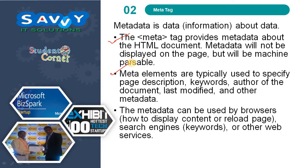Meta data will not be displayed on the page but will be machine parsable. Meta elements are typically used to specify the page description, keywords, author of the document, last modified, and other meta elements.